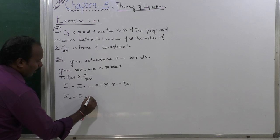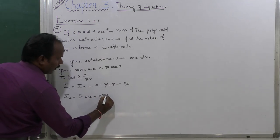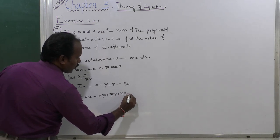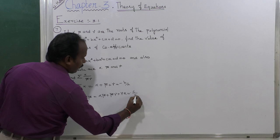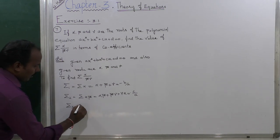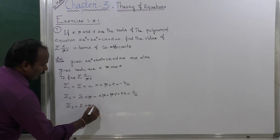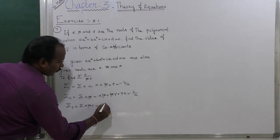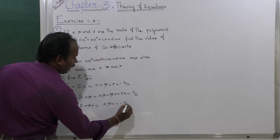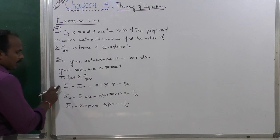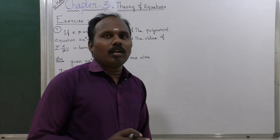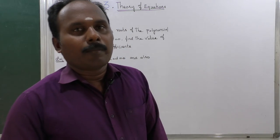Next, find Σ2 = summation of alpha·beta = alpha·beta + beta·gamma + gamma·alpha = c divided by a. Next, Σ3 = summation of alpha·beta·gamma = alpha·beta·gamma = minus d divided by a. So we have Σ1, Σ2, and Σ3.